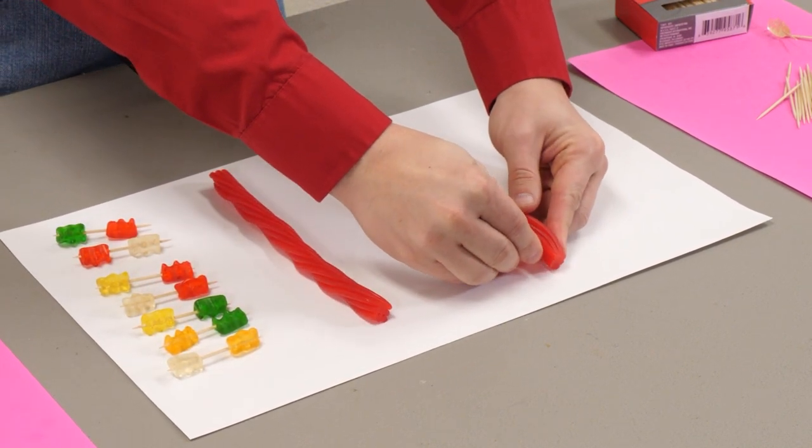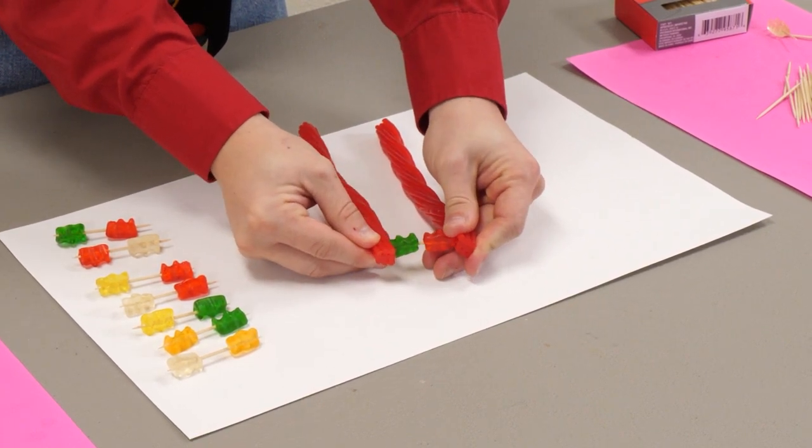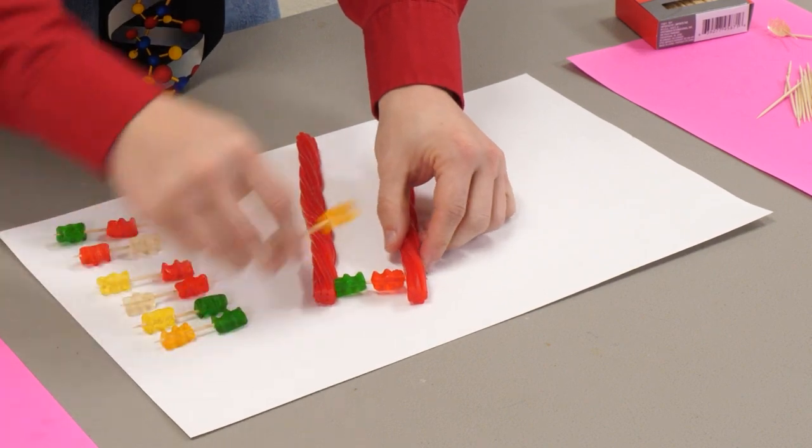Then you will take your Twizzlers or Red Vines and make a ladder by sticking in your base pairs. Be careful as they can poke your hands.